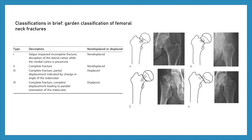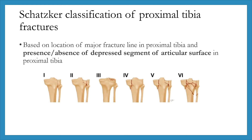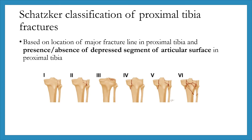Type 1 and Type 2 are considered non-displaced fractures, while Type 3 and 4 are considered displaced fractures. Schatzker classification of proximal tibia fractures is based on the location of the major fracture line in the proximal tibia and the presence or absence of a depressed segment of the articular surface.